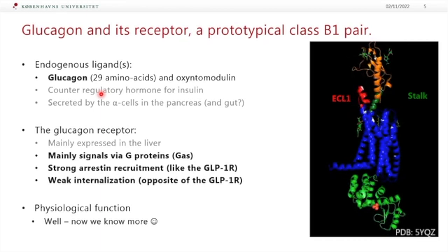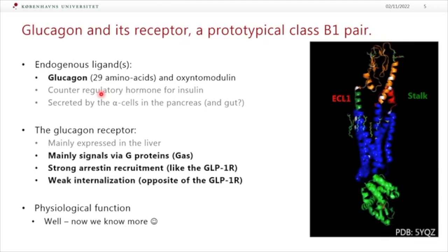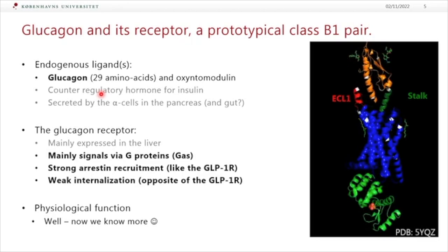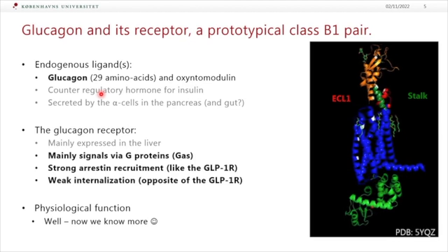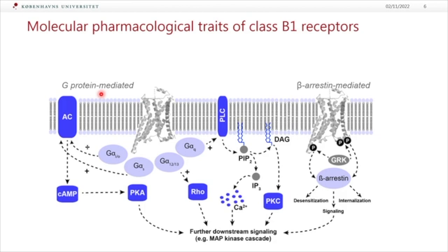Glucagon is one of the main ligands for the glucagon receptor; it also binds oxyntomodulin. I want to focus on the signaling of the glucagon receptor. It is of course strong in GS, as you might know, but it also has a very strong arrestin recruitment, like the GLP-1 receptor, and it has this very weak internalization — which is opposite to the GLP-1 receptor.